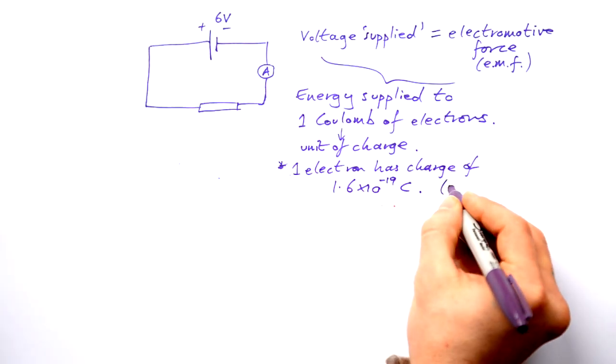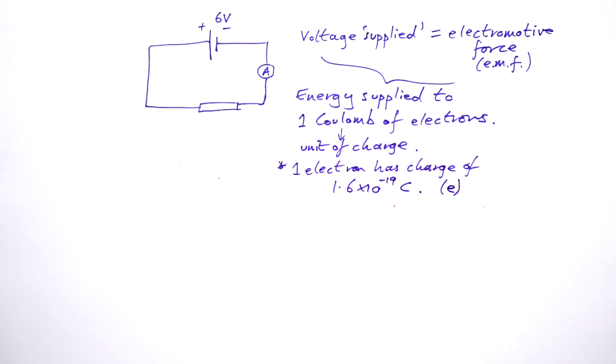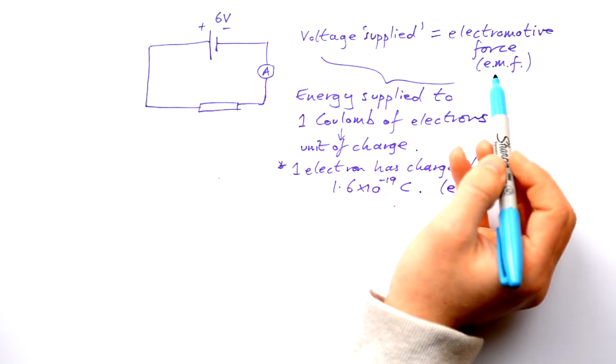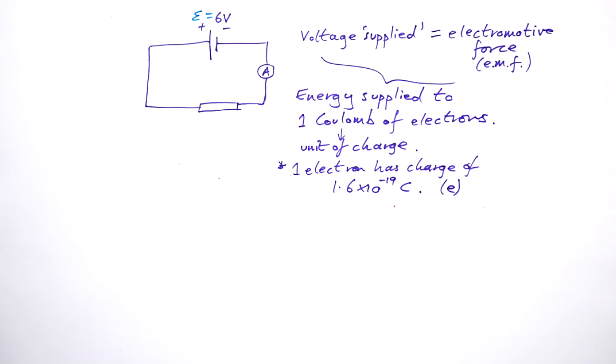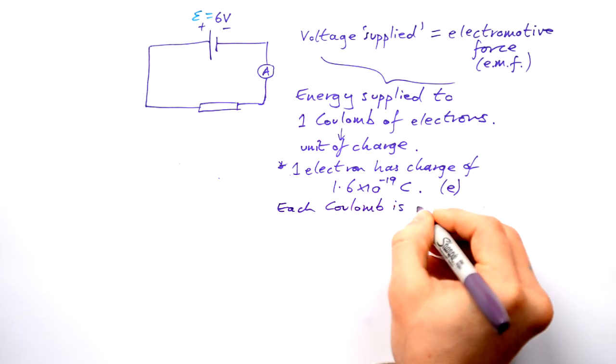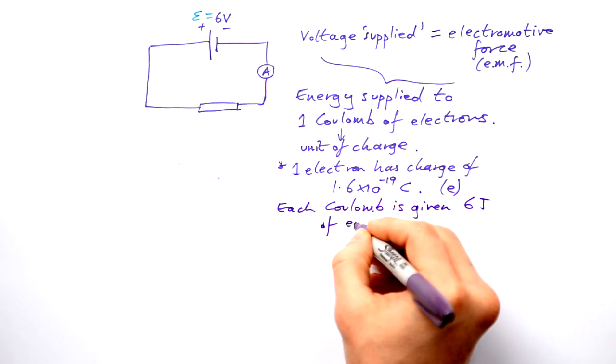And it turns out that one electron has a charge of 1.6 times 10 to the minus 19 coulombs. So you can see that we need not only billions, but trillions and trillions of these electrons to make up one coulomb of charge. That's why it's better to talk about coulombs and not the energy given to one electron. By the way, we call this E for short, little e. So here we said voltage supplied is the same thing as electromotive force. So I probably should say that epsilon there, that's our EMF, that's six volts. In other words, each coulomb is given six joules of energy.